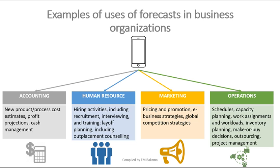In operations management, we deal with scheduling and project management — deciding the order of key activities. We also need to know our capacity: if our facility can't hold more than 100 employees and can only produce 5,000 items, we need to plan accordingly. Similarly, if our inventory only holds 5,000 units but we produce 6,000, where does the rest go? These are the questions forecasting helps us answer.